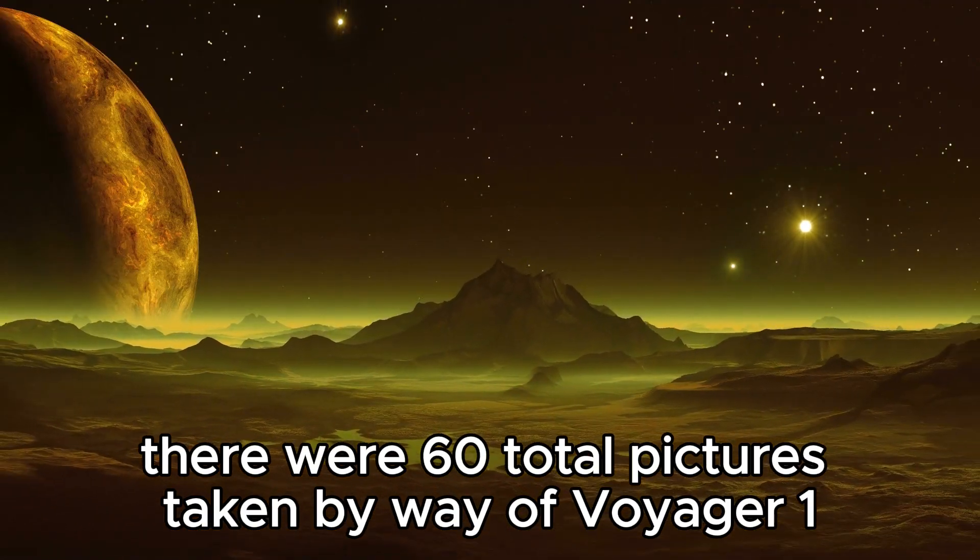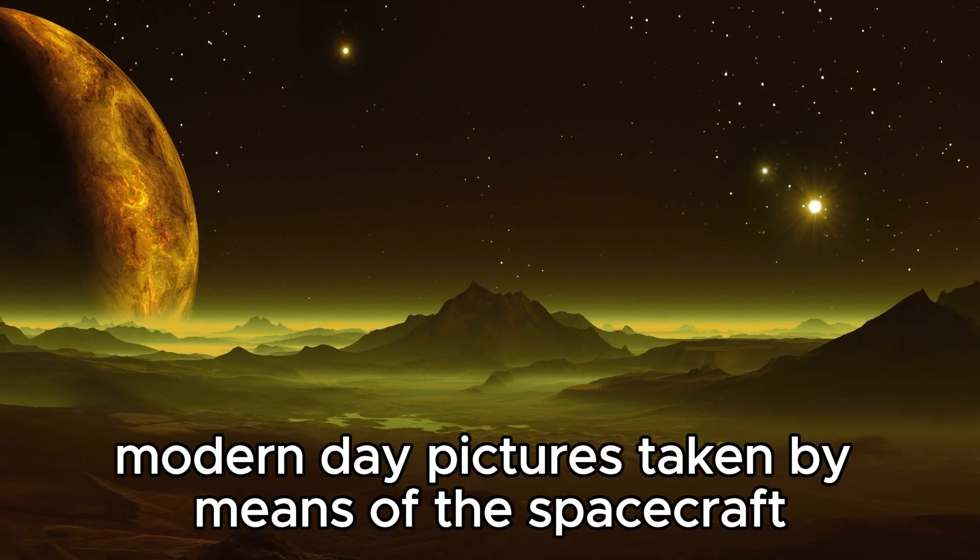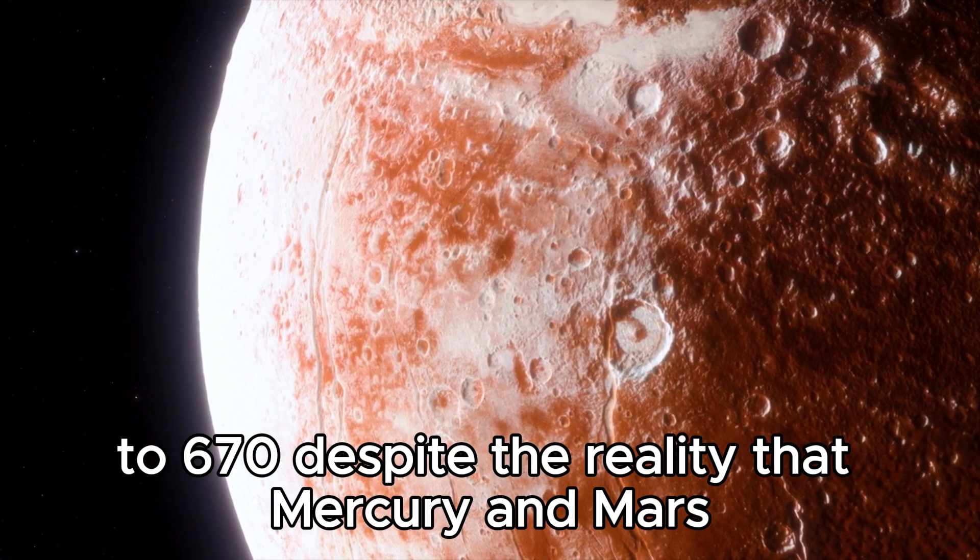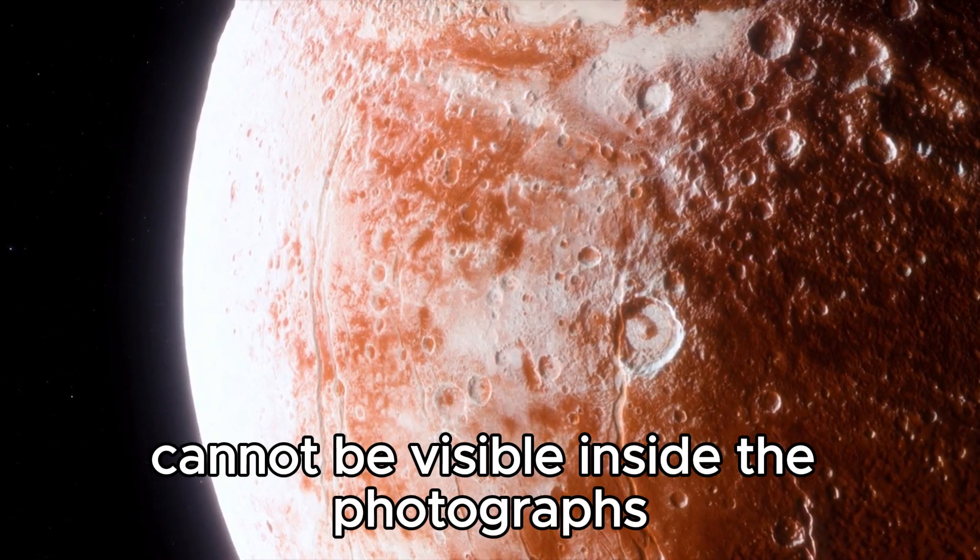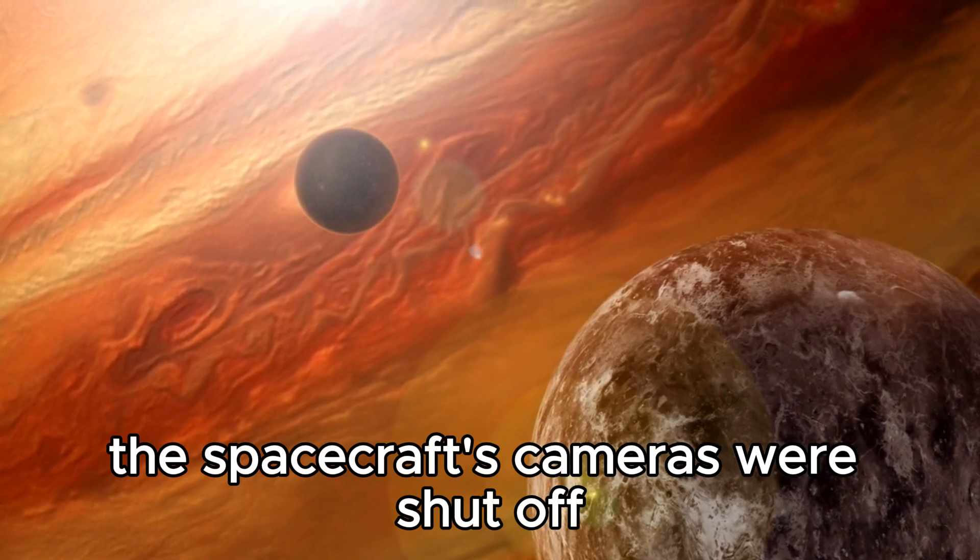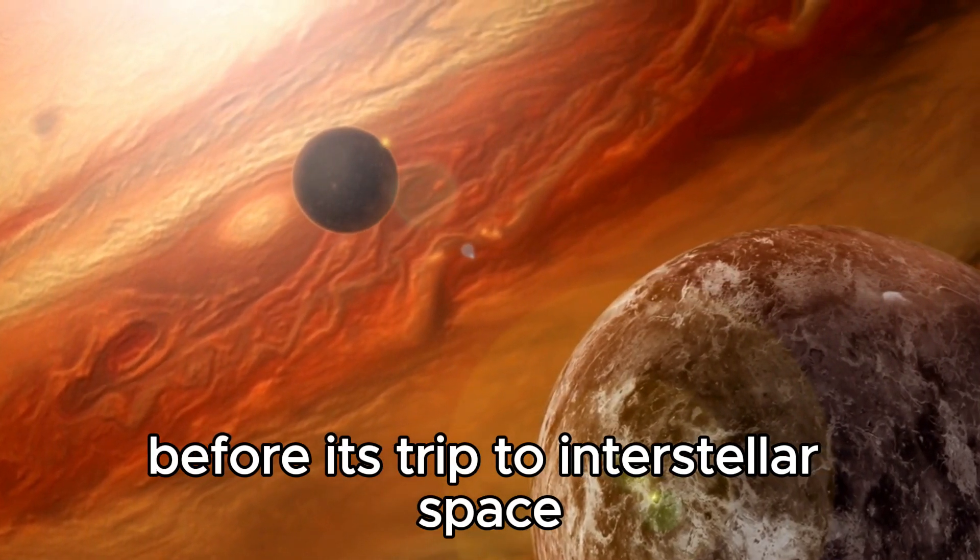There were 60 total pictures taken by Voyager 1, bringing the full number of pictures taken by the spacecraft to 670. Despite the fact that Mercury and Mars cannot be seen in the images for various reasons, in the end, the spacecraft's cameras were shut off to conserve energy and memory before its trip to interstellar space.